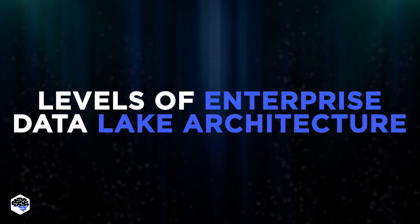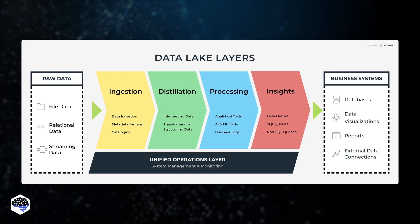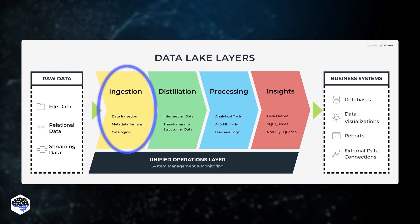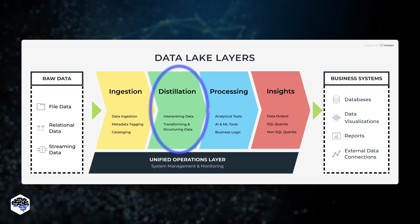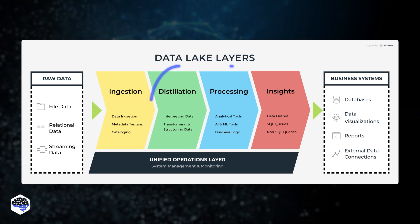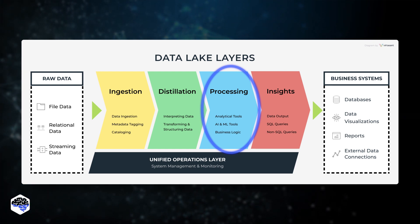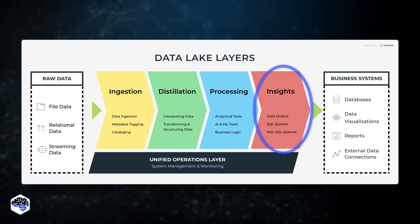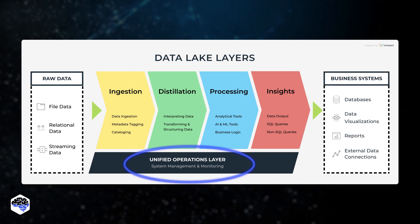What are the levels of enterprise data lake architecture? We can think of each data lake as a separate repository that has discrete layers: reception level, distillation layer that converts and interprets data for further analysis, processing layer that runs custom queries and analytics for structured data, analytics or insights layer — one of the most important levels — and a unified operations layer.